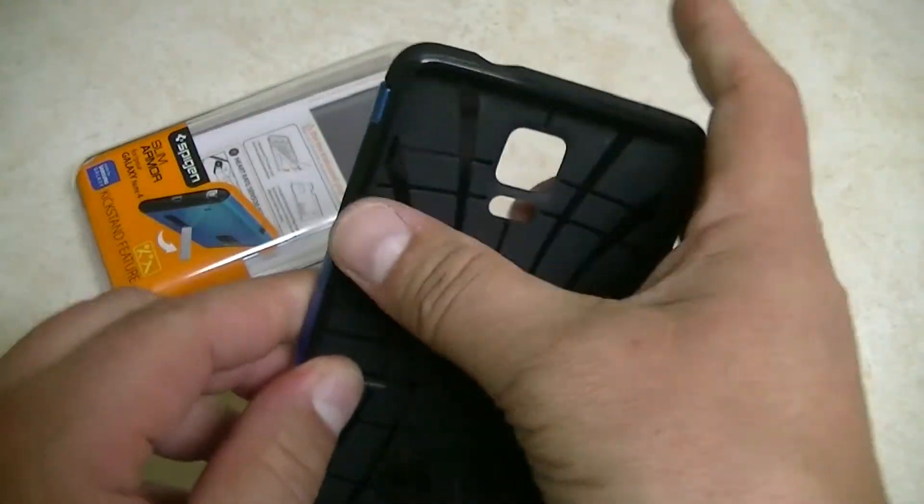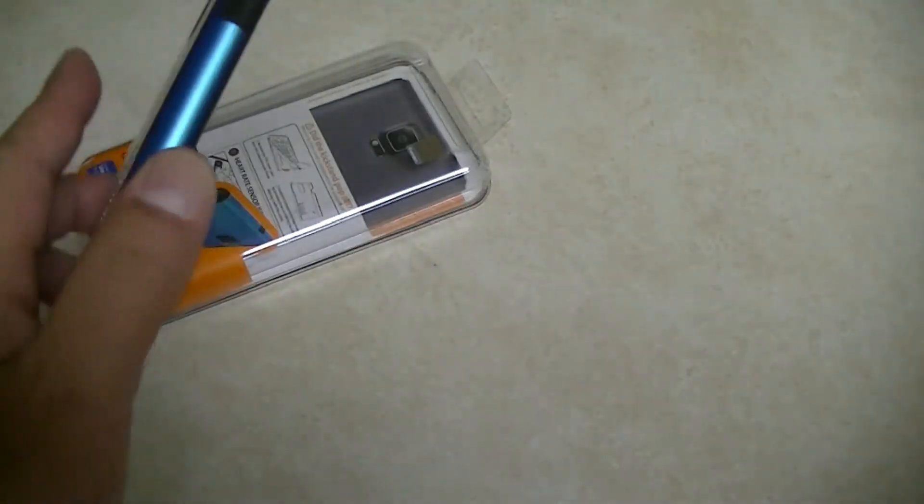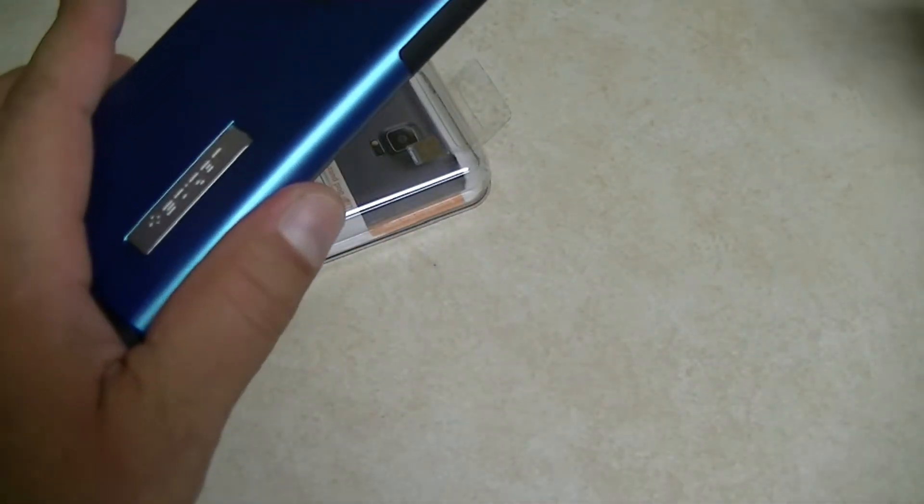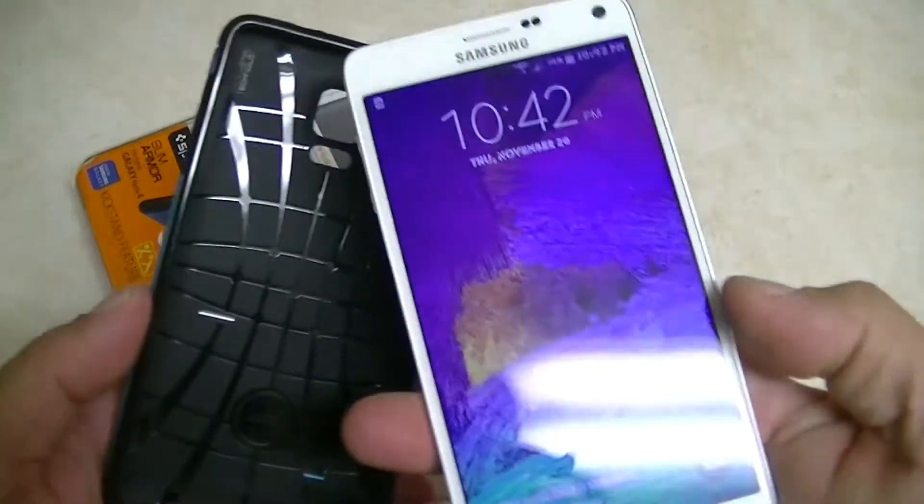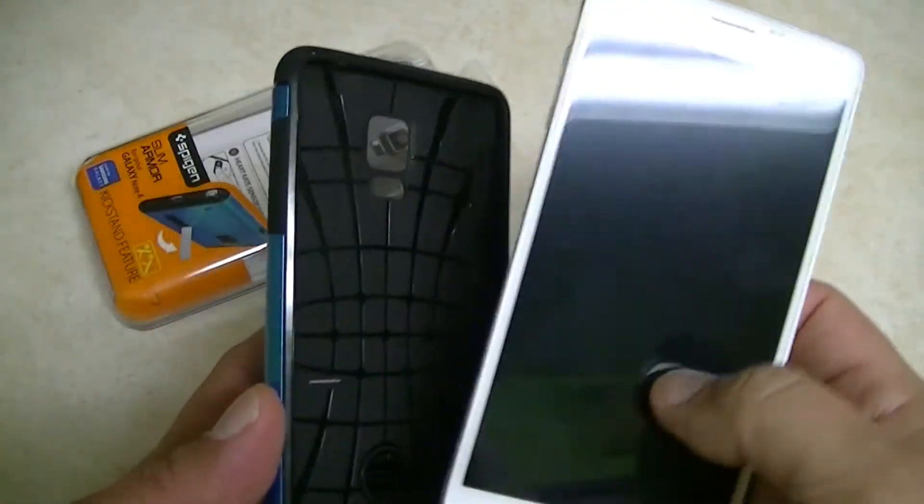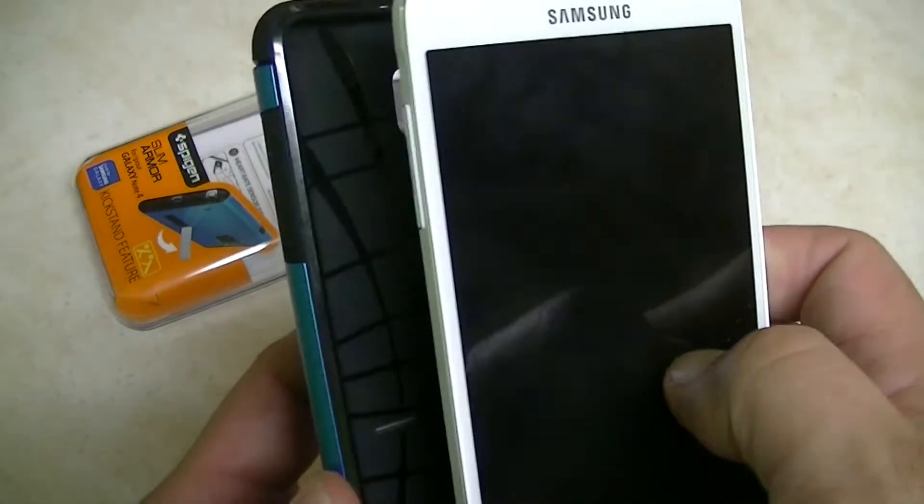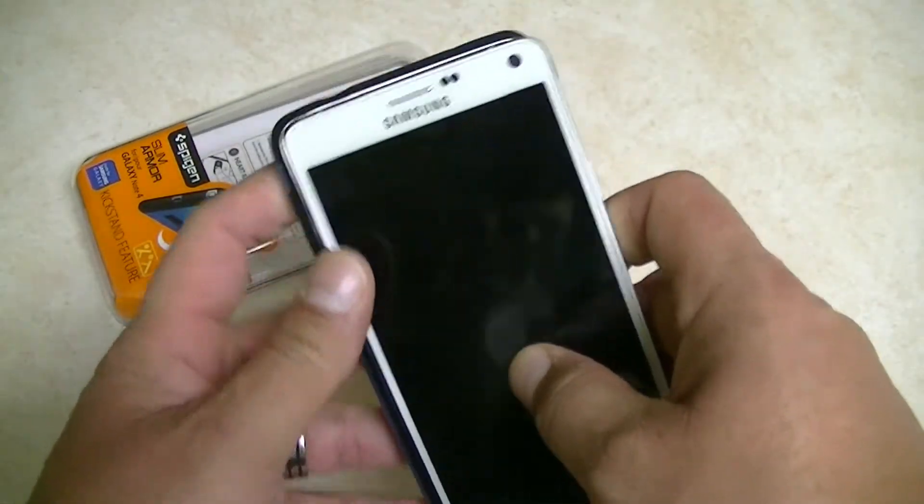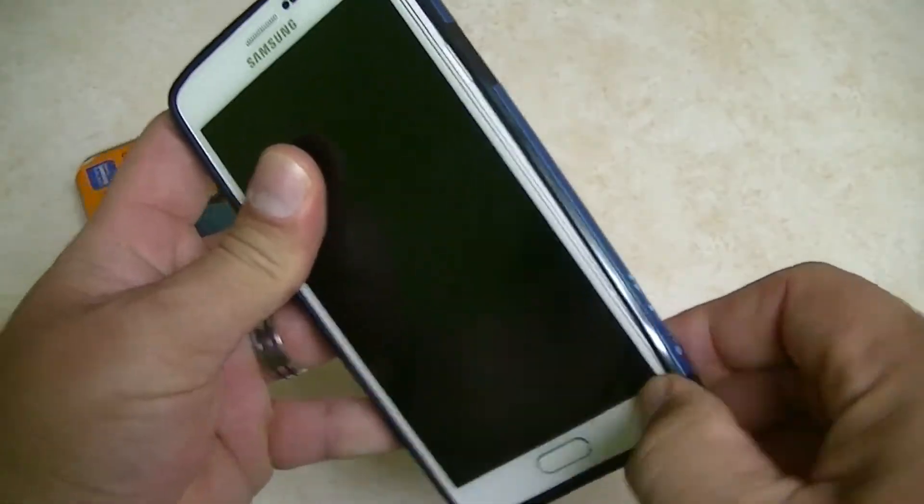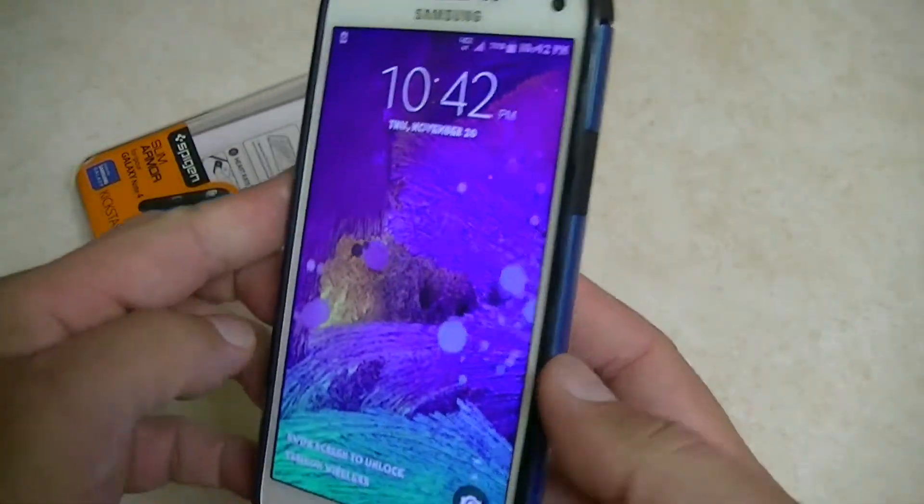And let's go ahead and install this on a Samsung Galaxy Note 4. I have the Samsung Galaxy Note 4 right here in the white color. And this is really easy to install. Just start from the volume rocker area. Just make pressure and the case is installed.